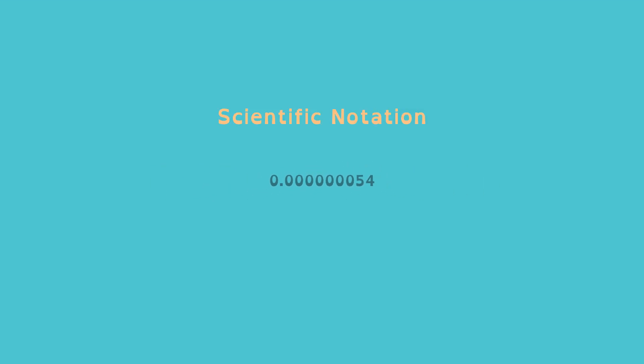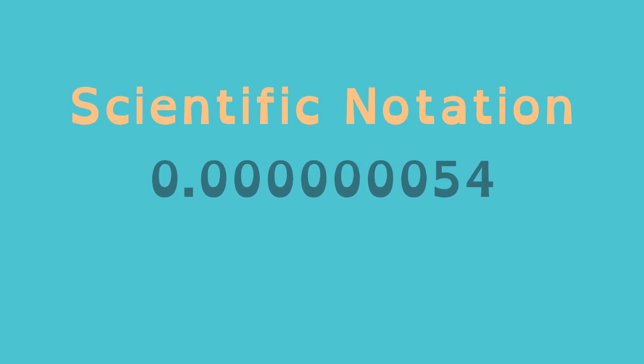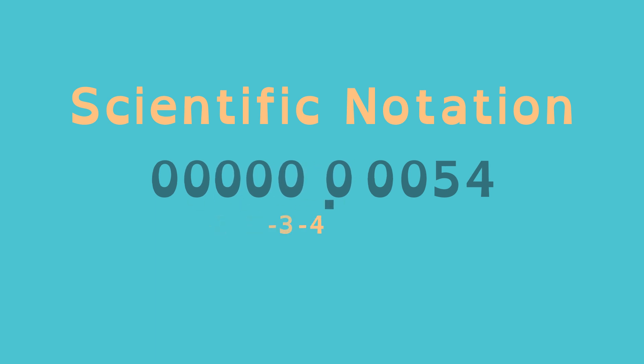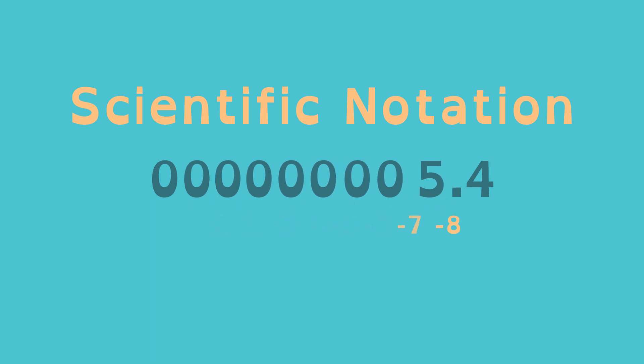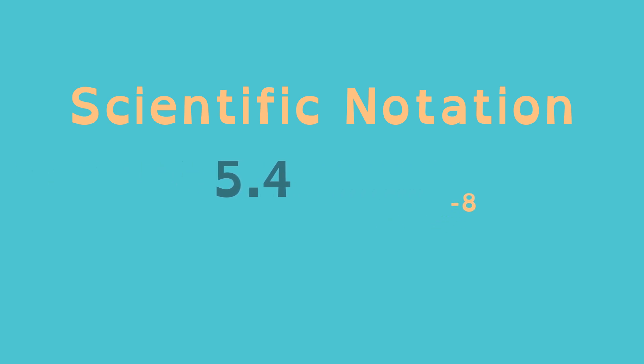Here's a number in decimal notation. That's a small number. Time for scientific notation. First, move the decimal over until there's just one non-zero digit to the left of the decimal point. The exponent indicates how many places the decimal point has moved to the right.